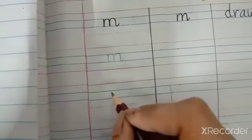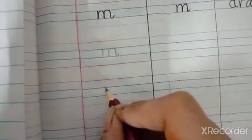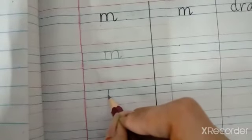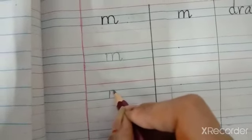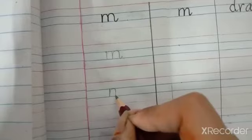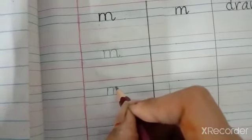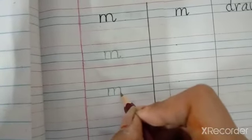What's the sound of this letter? M. Then again come here, starting from here. Go down, go up, make a hop, then come down, then go up, make a hop, come down and turn a little. What it becomes? M. M.